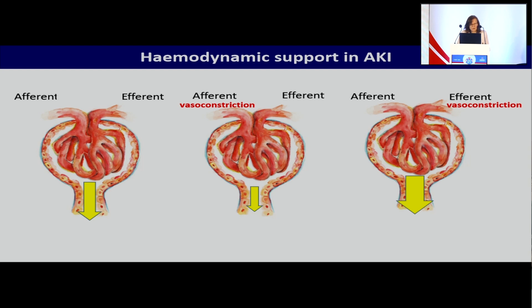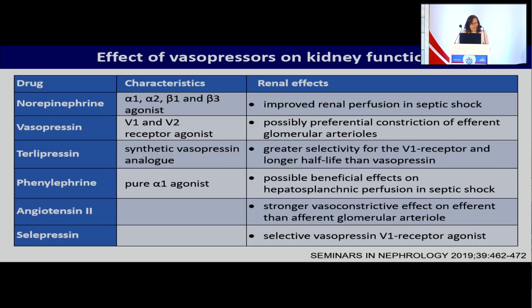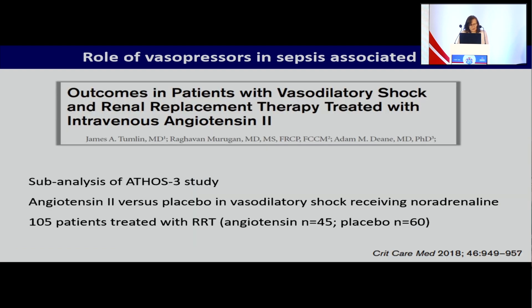In contrast, a vasopressor with predominant action on the efferent branch could increase glomerular filtration. It's really important because these existing vasopressors, which we use in clinical practice, act on different parts of the nephron. Just as an example, angiotensin acts predominantly on the efferent branch of the glomerular vasculature. And the sub-analysis of the ATHOS-3 study suggested that angiotensin may have a role in helping patients to recover from acute kidney injury.